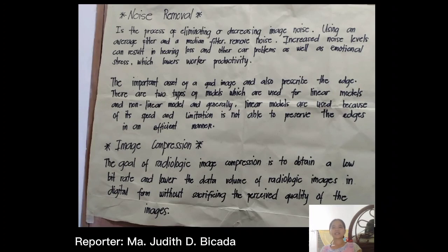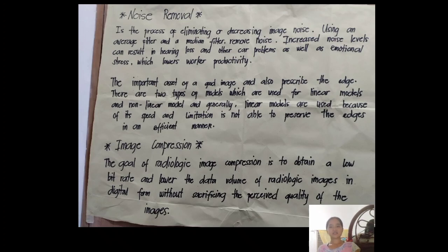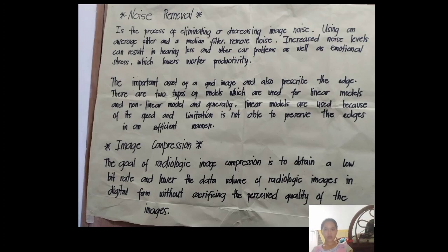Good day, everyone. I am Margerity Bicada. My topic is all about noise removal and image compression. Noise removal is the process of eliminating or decreasing image noise using an average filter and a median filter. Increased noise levels can result in hearing loss and other problems, as well as emotional stress, which lowers worker productivity. There are two types of models used: linear models and non-linear models. Generally, linear models are used because of their speed, though they may not be able to preserve edge details in an efficient manner.